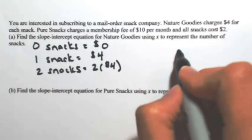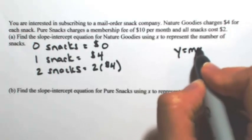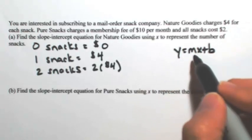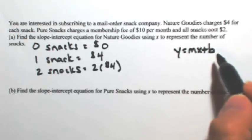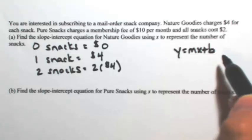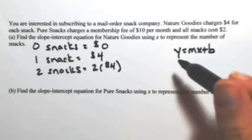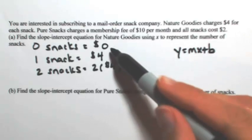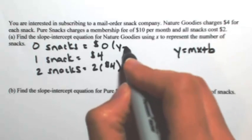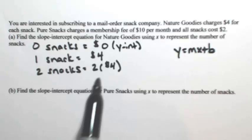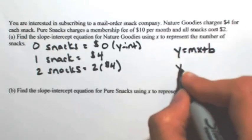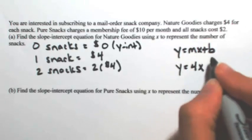What we want to find is the slope-intercept equation, which is y equals mx plus b, where m is the slope, so that's how much everything is changing by. And b is going to be the y-intercept, in other words, when x is zero. When x is zero, when there's no snacks, you're not charged anything, so zero is our y-intercept. And as you buy a snack, it's going to cost you $4 more. So our slope is 4, and our b is zero.